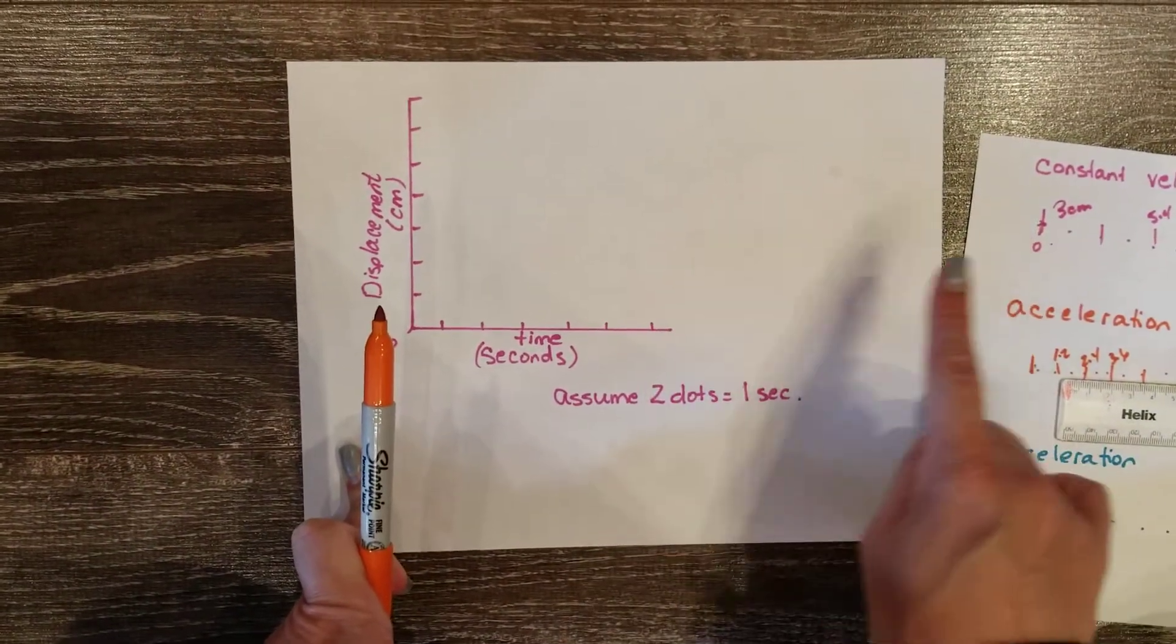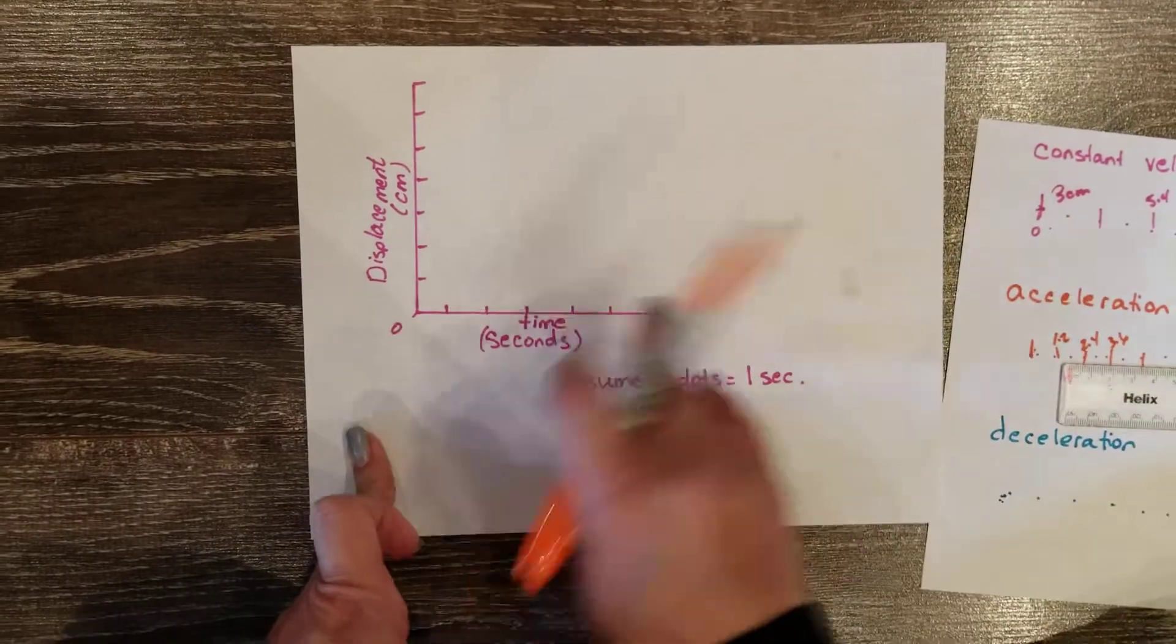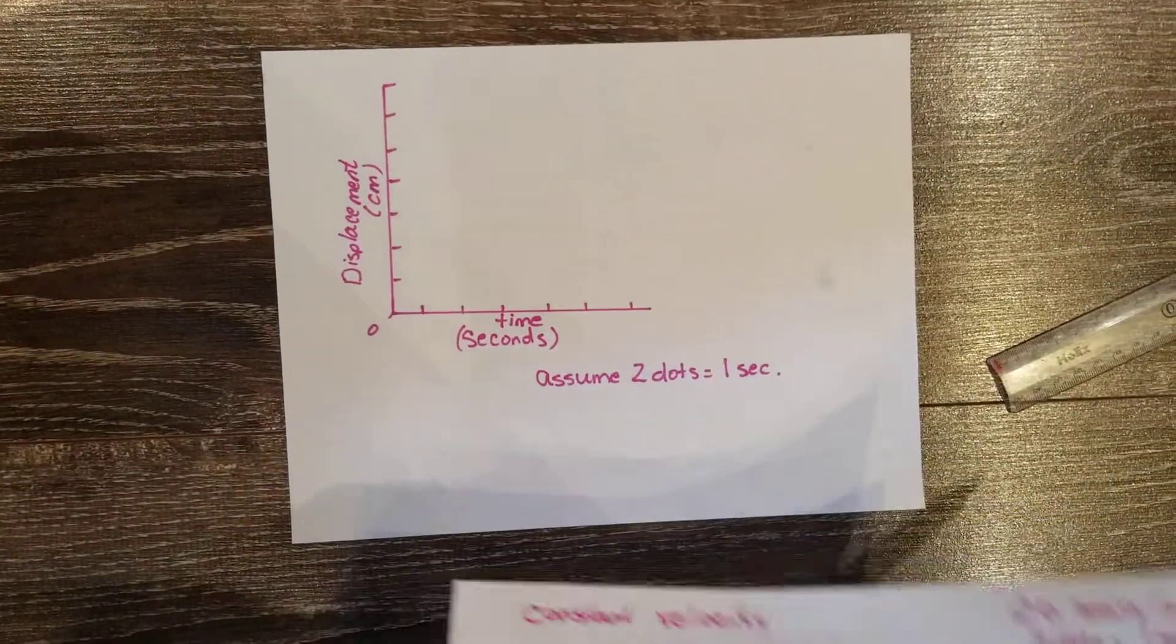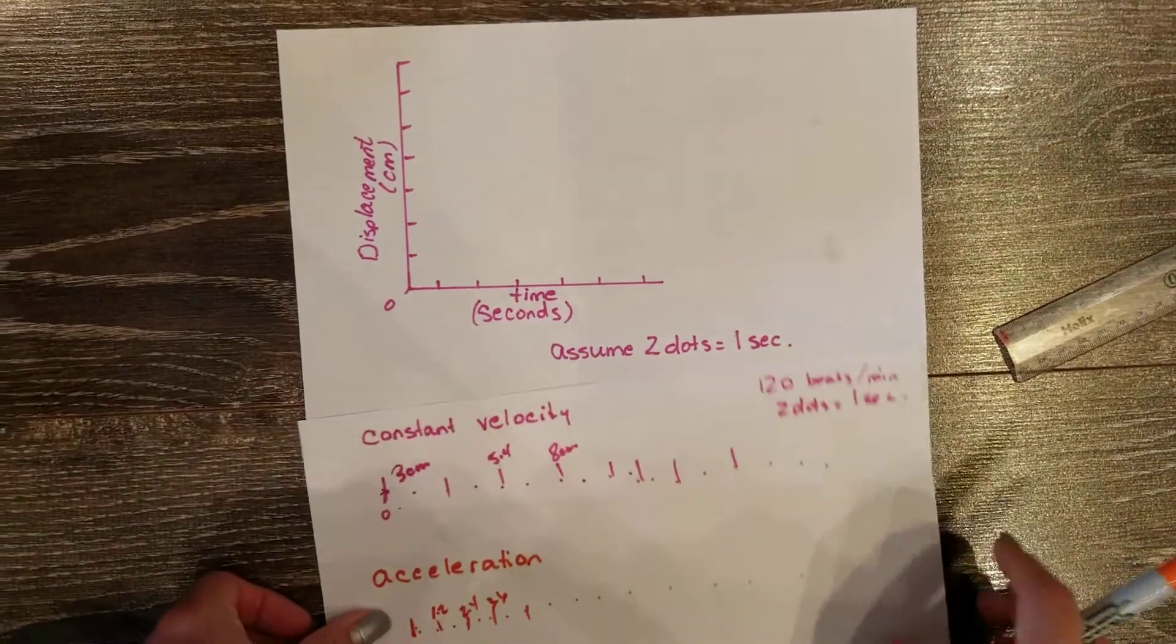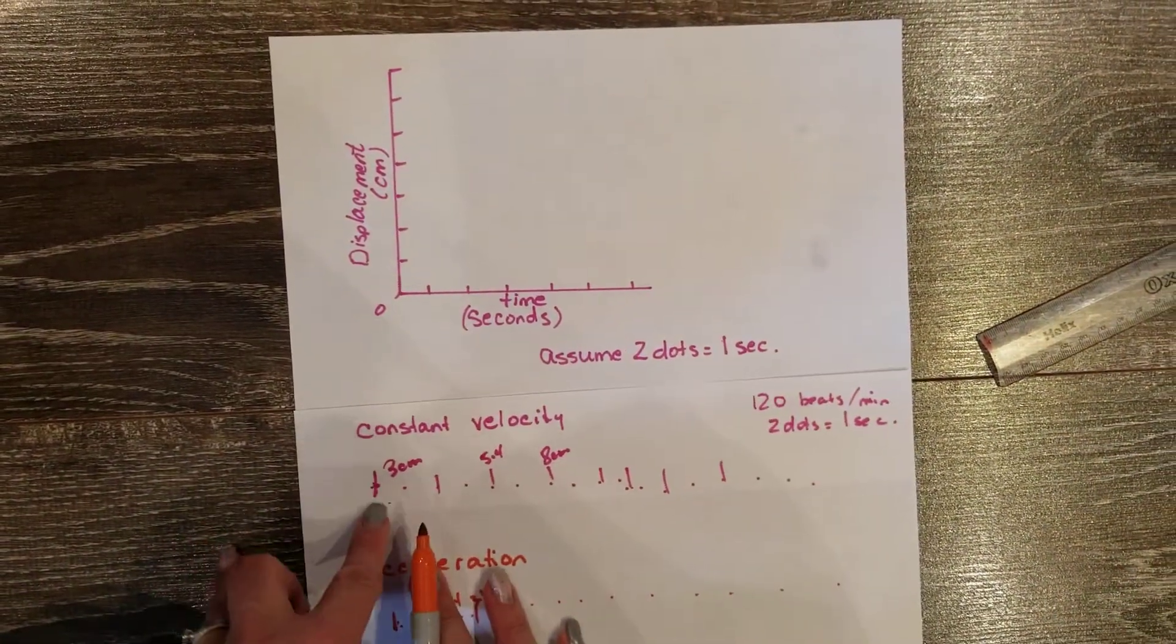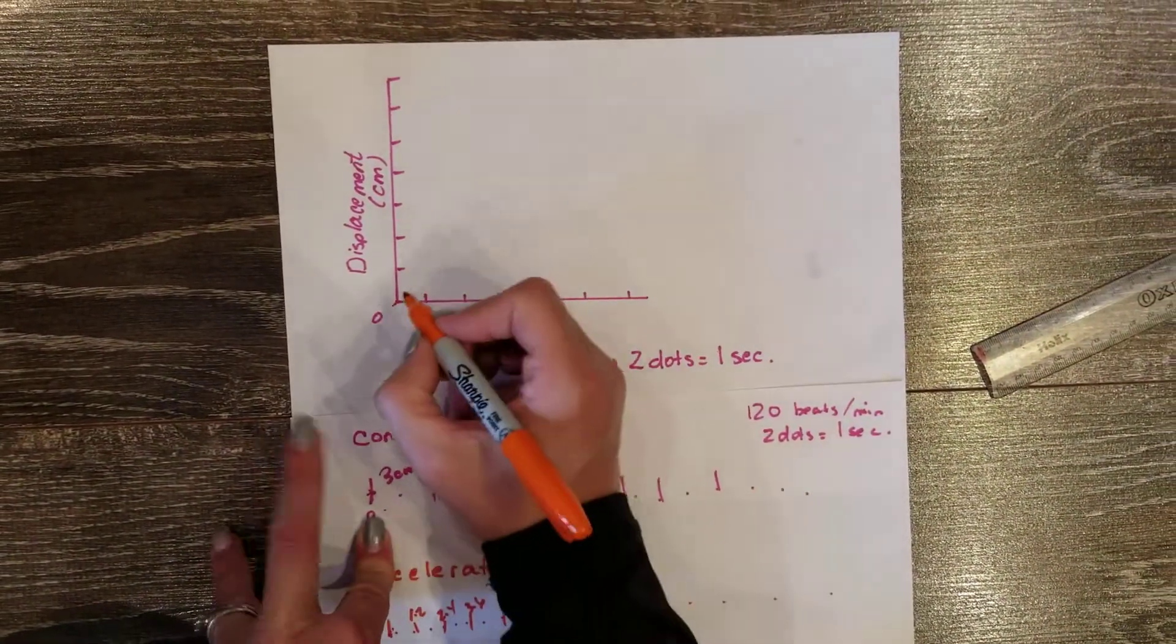Remember, every two dots was one second. From our constant velocity graph that we had, I can see that at time zero, I was at position zero.